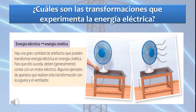En base a lo anterior, surge la siguiente pregunta: ¿cuáles son las transformaciones que experimenta la energía eléctrica? Hay una gran cantidad de artefactos que pueden transformar energía eléctrica en energía cinética. Para que ello suceda, deben generalmente contar con un motor eléctrico. Algunos ejemplos de aparatos que realizan esta transformación son la juguera y el ventilador.